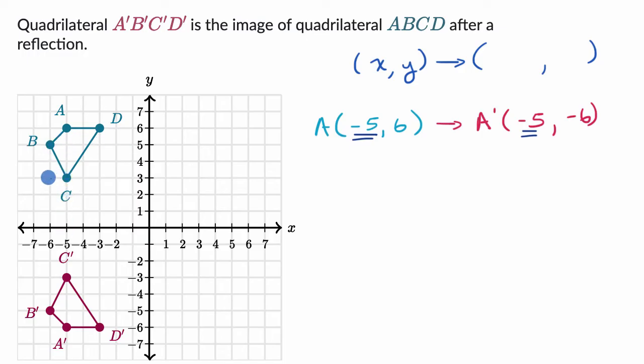And that makes sense because when we do this reflection across the X axis, it makes sense that our X coordinate stays the same, but that the Y coordinate, since it gets flipped down, becomes the negative. It becomes the opposite of what it was before.